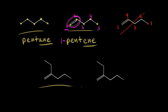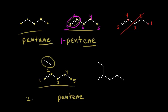For this next example, our goal is to find the longest carbon chain that includes the double bond, and give the double bond the lowest number possible. The longest chain including the double bond makes this carbon one, then two, three, four, and five — a five-carbon alkene, so pentene. We also have one substituent coming off our carbon chain: a two-carbon alkyl group, which we call ethyl. With an ethyl group coming off carbon two, we'd call this 2-ethylpentene.